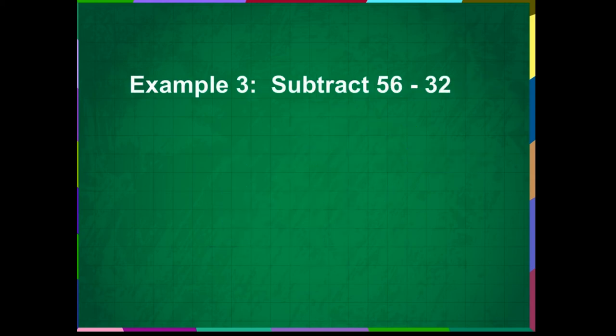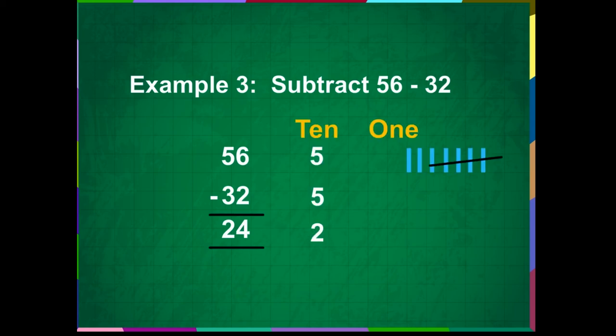Example 3. Subtract 56 minus 32. We know that 56 has 5 tens and 6 ones. We also know that 32 has 3 tens and 2 ones. Place the digits as shown on the screen.